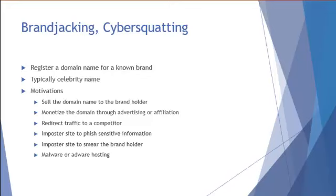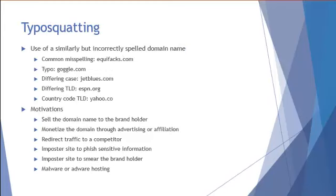This is an area where someone copies a brand you might have rights to and sets up a domain — something obviously very sensitive. A variant of that type of attack is called typosquatting. Here, even if you have your brand name covered with your own domain, there are many cases where people mistype a name or use the wrong case. An attacker can set up domain names for these likely typos and create websites looking like yours, so people who misspell Equifax, Google, JetBlue, or ESPN, or use the wrong TLD or even a different country code top-level domain, can end up on an attacker's site.